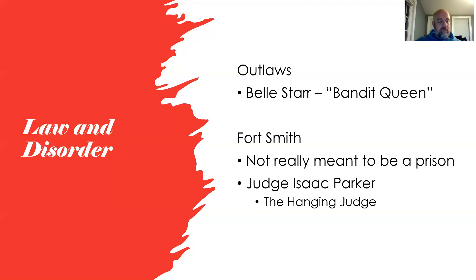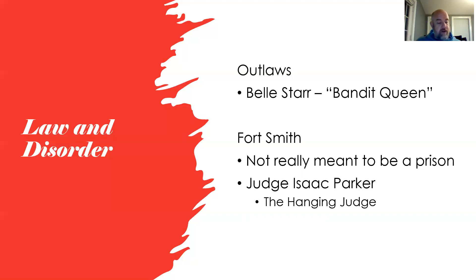Jesse James and Cole Younger came into Indian territory and briefly settled with a woman named Myra Belle Shirley, whose husband was Sam Starr. She later became known as Belle Starr, or the Bandit Queen. She often housed outlaws and kept them safe from the law. She faced trial for robbery and horse theft but never spent much time in jail. She was killed in 1889, her slayer's identity never learned. Fort Smith played a big role in trying to stop the lawlessness in Indian territory.